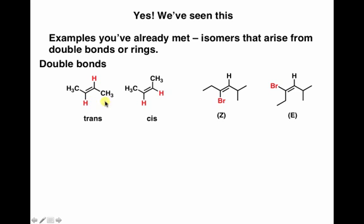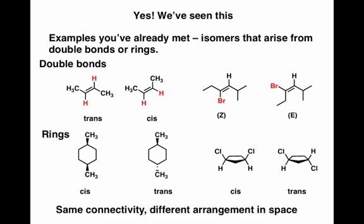The same is true for E and Z double bond isomers. This is also true of certain cyclic molecules. For example, both of these molecules are 1,4-dimethylcyclohexane, but they have different three-dimensional shapes. No amount of rotation can convert one into the other — they have the same connectivity, but a different arrangement in space: cis and trans. Now on the right here is a different way of showing a cyclic molecule, where we can see likewise that the two chlorines are on the same side of the ring or on the different side of the ring. Here we're looking at the cyclic molecule from the side — it's kind of a side-on view.